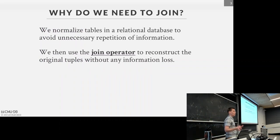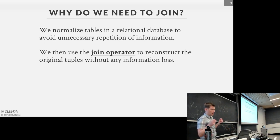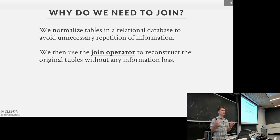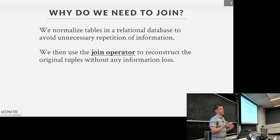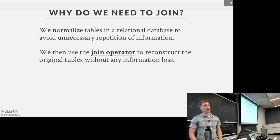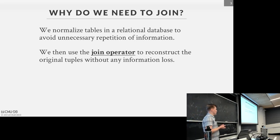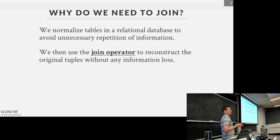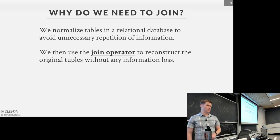Let's talk about the context for why we need joins in the first place. We pray at the altar of Ted Codd and the relational model in this class, so that means we're going to reduce duplication of our information and separate it into different tables. But when we want to query and combine that information we have to join stuff — things like customers and orders tables, or students and classes tables. 10-15 years ago, NoSQL systems were saying joins are stupid, just denormalize all your data.